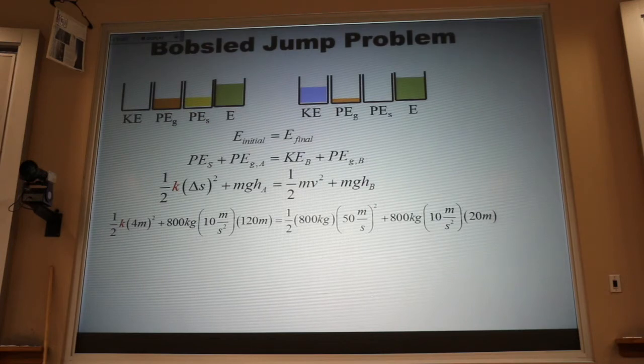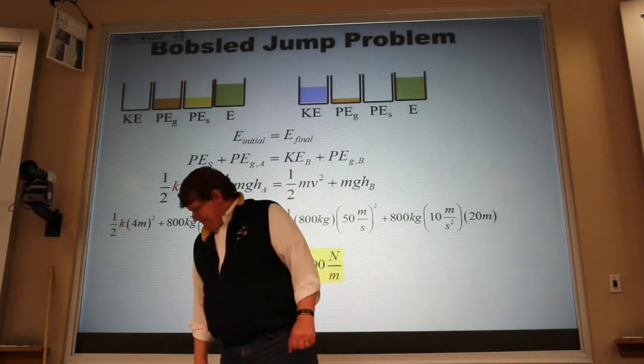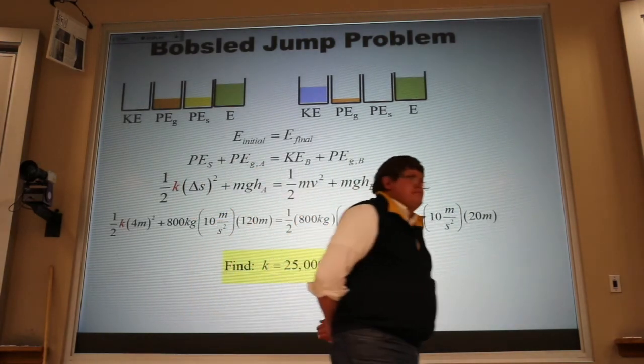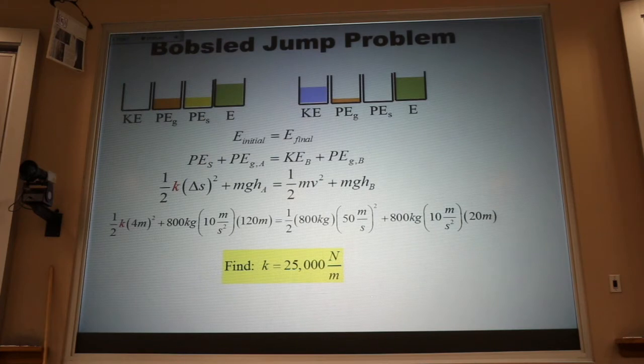Now, if that just looks scary to you, if that looks like you could never figure that out, this next exam is going to be a nightmare. If that's just algebra to you, and algebra is easy, you're going to be fine. The answer is 25,000 newtons for each meter. Check to see if your neighbor got that, please.